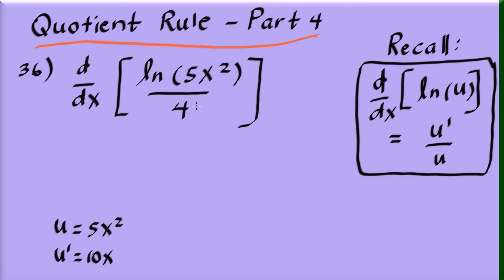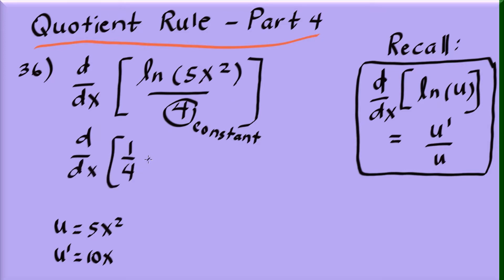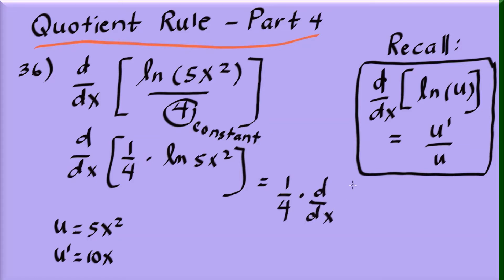Now this is a fraction, but since 4 is just a constant, we can rewrite this as the derivative of one-fourth times the natural log of 5x squared. The constant one-fourth stays as is, so we just need to differentiate the natural log of 5x squared.